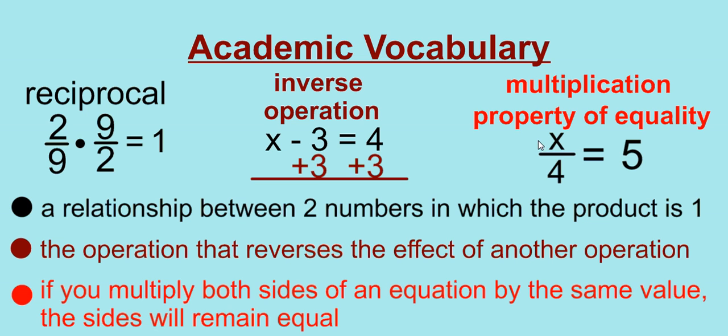So in this equation, again, I want to isolate the variable, and I'm going to do the inverse of dividing by 4. So I'm going to multiply both sides by 4, the same value, and they will remain equal.